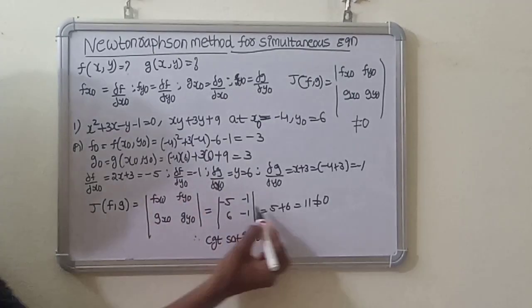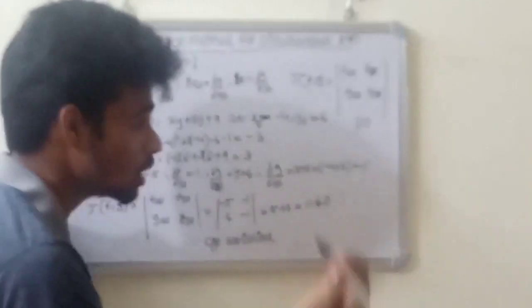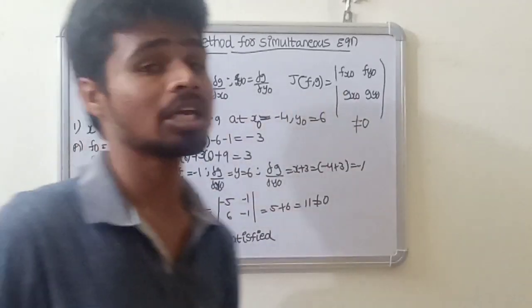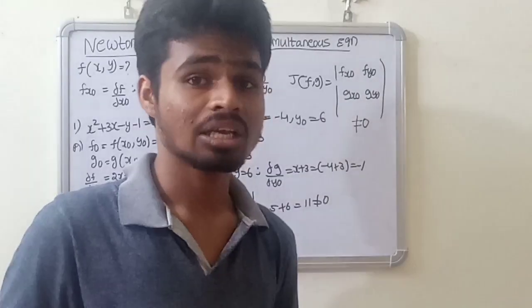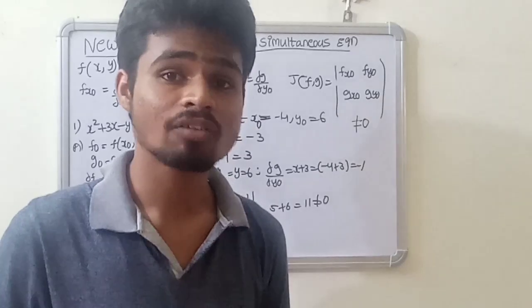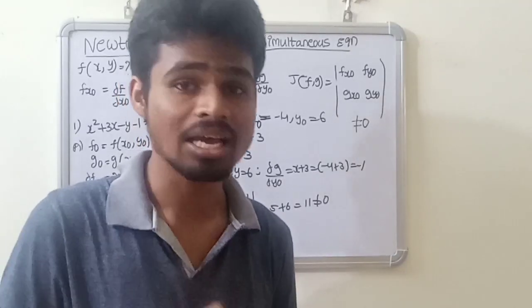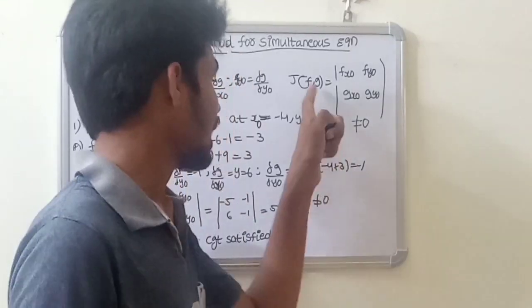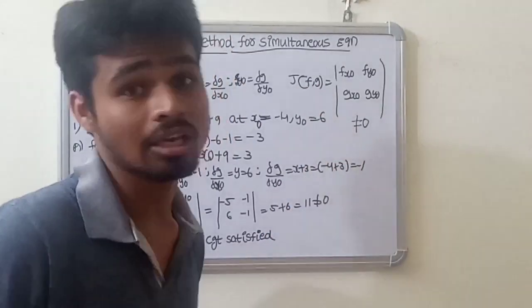After substitution, the Jacobian evaluates to a value not equal to zero — here it equals 11, which is not equal to zero. Therefore the Jacobian J of f,g is not equal to zero, so the convergence property is applied and satisfied.